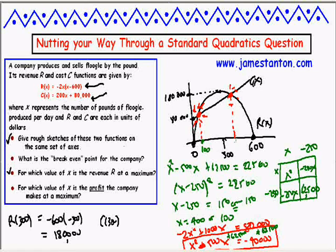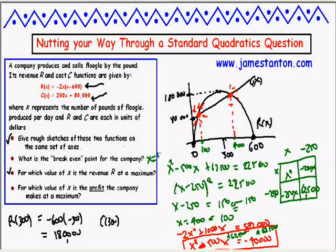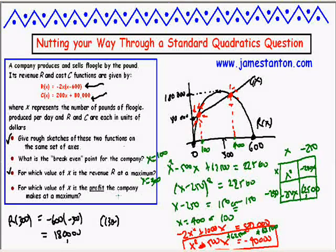Adding 250 to both sides: x = 400 or x = 100. So this must be the x = 100 break-even point and the x = 400 point. The break-even point occurs at x = 100. The maximum revenue is at x = 300.